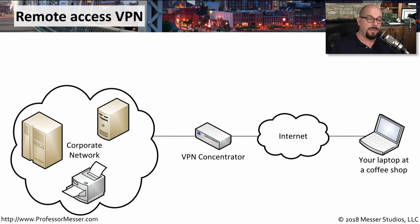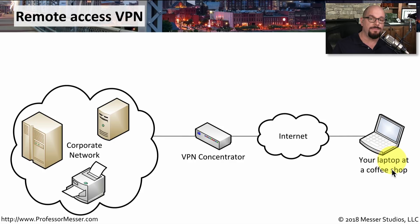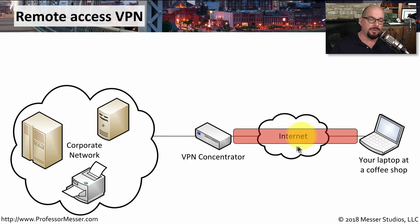For remote access VPN, you'd have a VPN concentrator at your main location with all corporate resources inside the network. The VPN concentrator is connected to the internet, which means you could be anywhere — perhaps at a coffee shop — needing access to the internal network. You would start up your VPN software on your laptop, and it would build an encrypted tunnel into the VPN concentrator. Anything sent over this VPN tunnel would be encrypted between your laptop and the VPN concentrator. If anyone was listening in the middle, they wouldn't be able to make any sense of the communication.